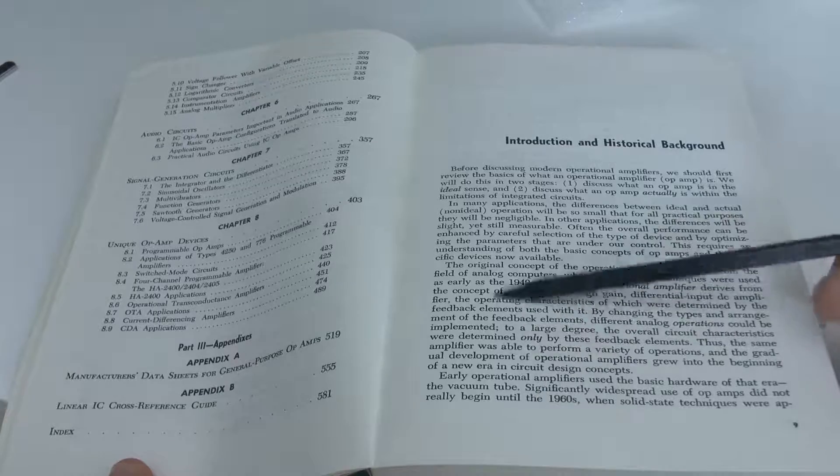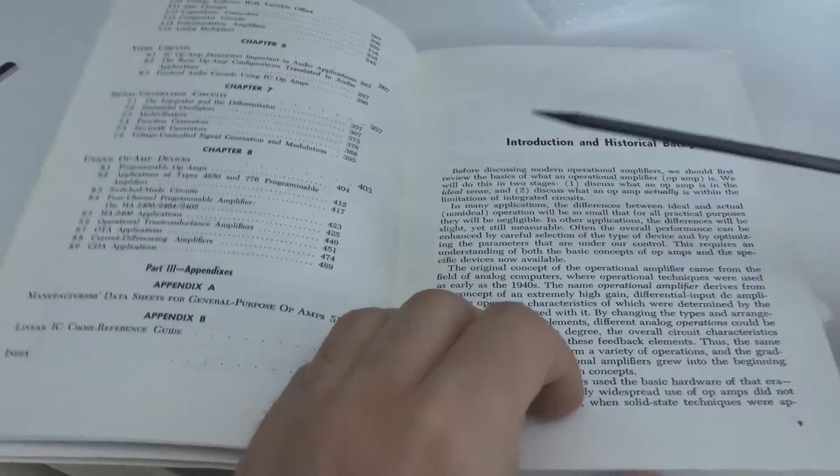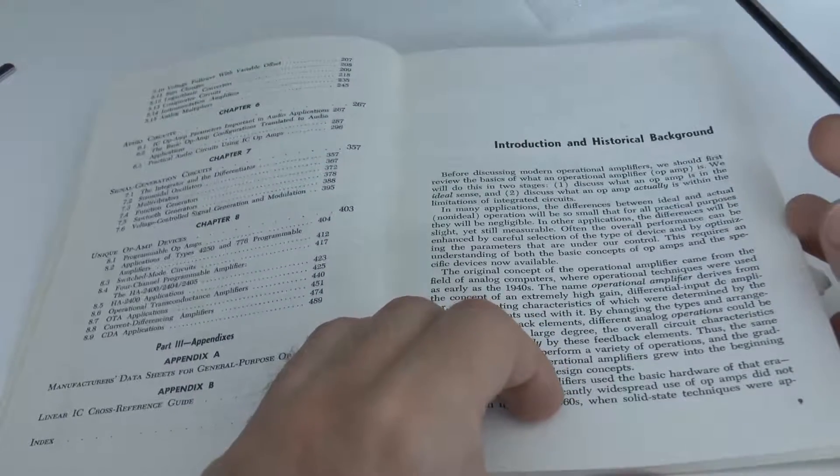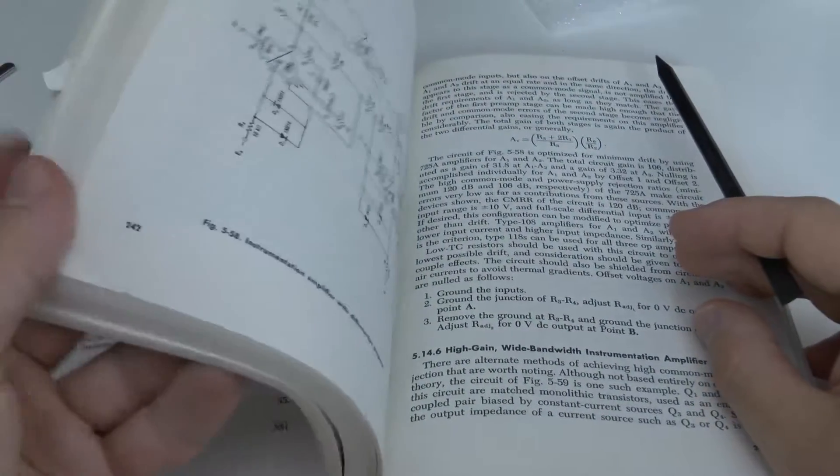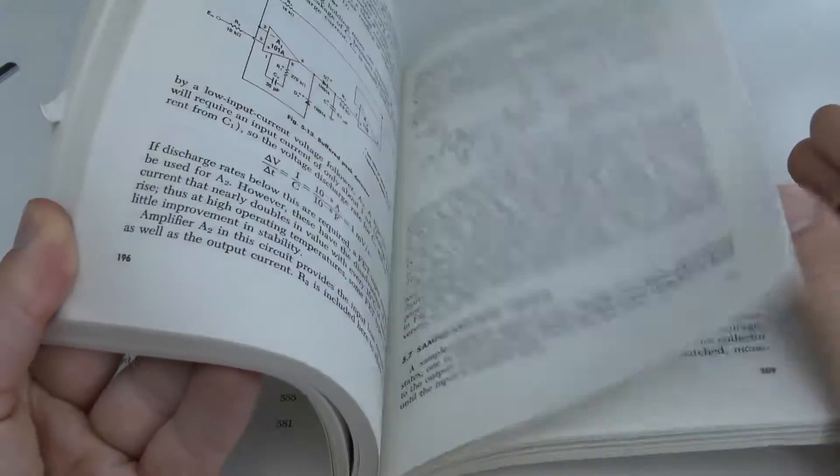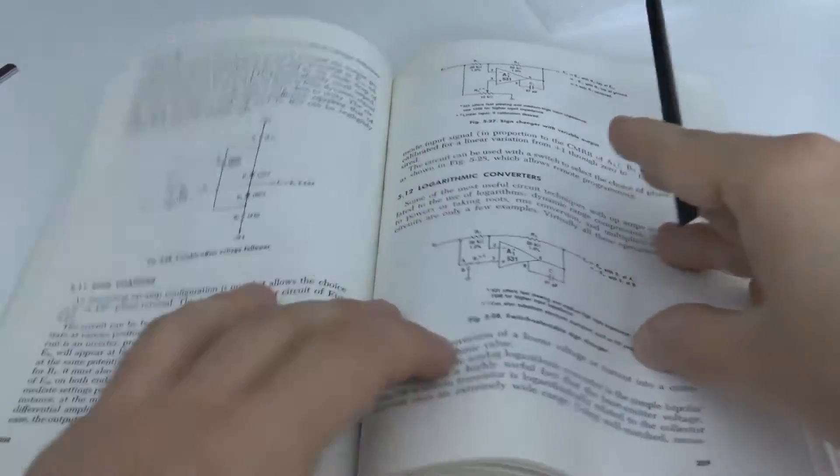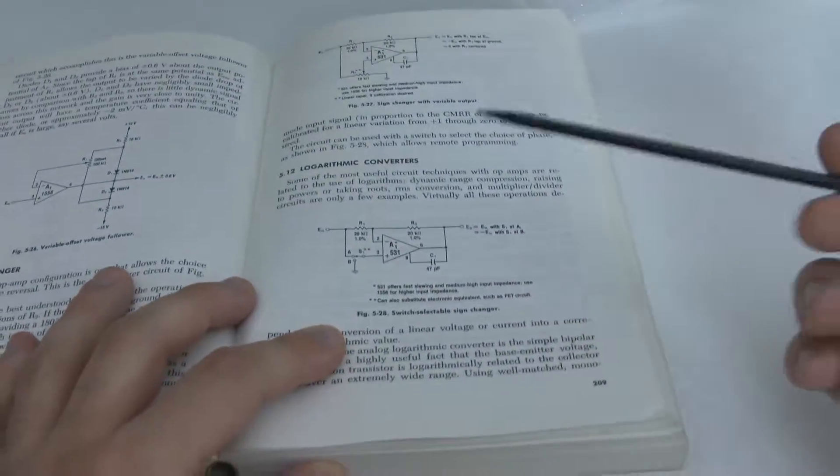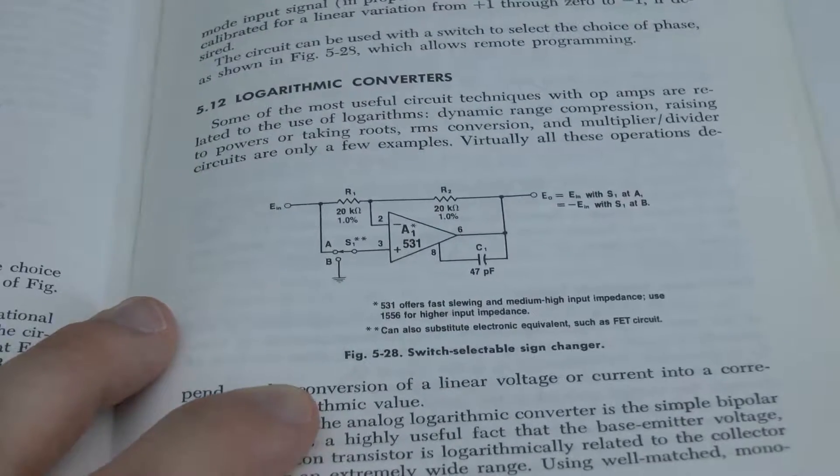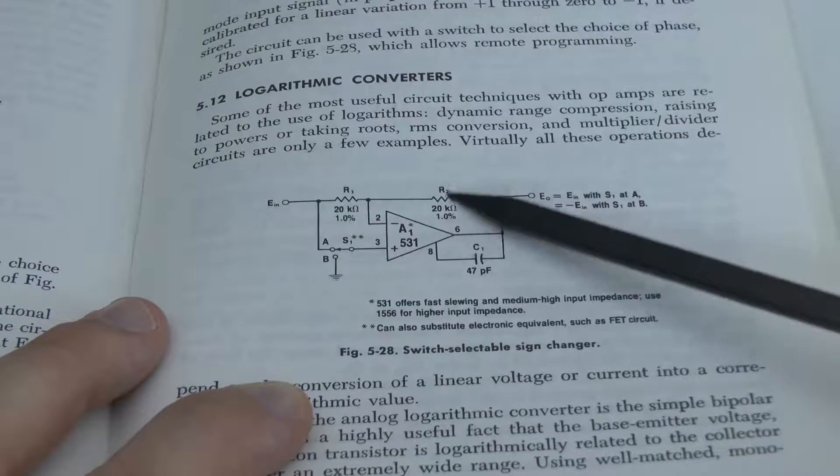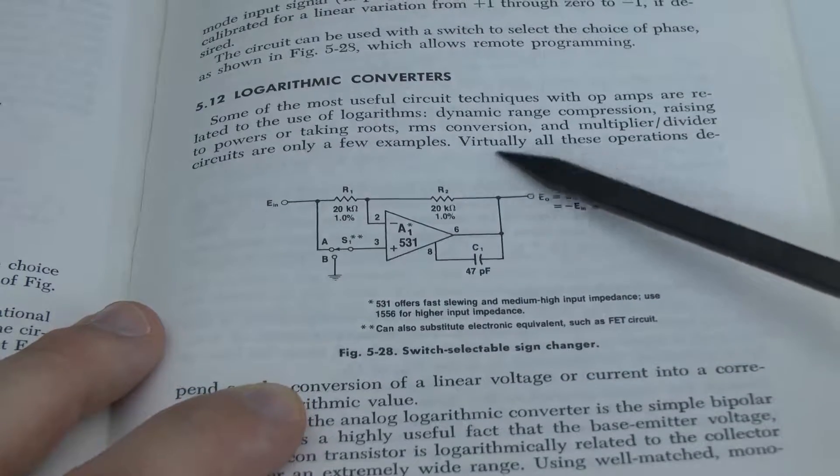And the interesting approach about Jung is that he really gives you ready-to-run circuits, or let's say somewhat ready-to-run if you can find the relevant components. So for example, I'm diving in here into the logarithmic converter, and I hope I can zoom in a little bit.